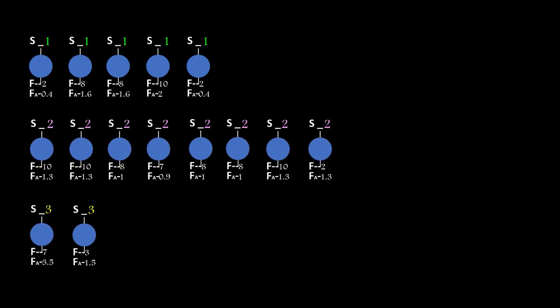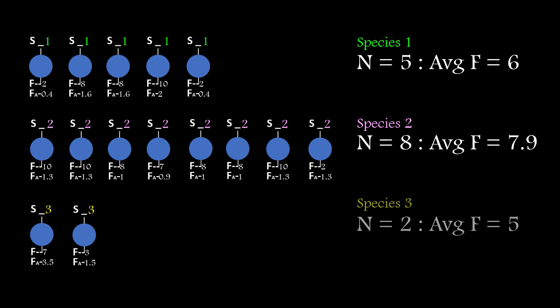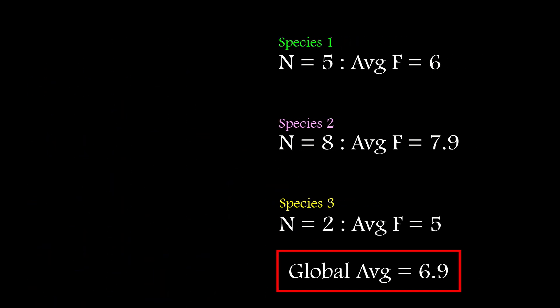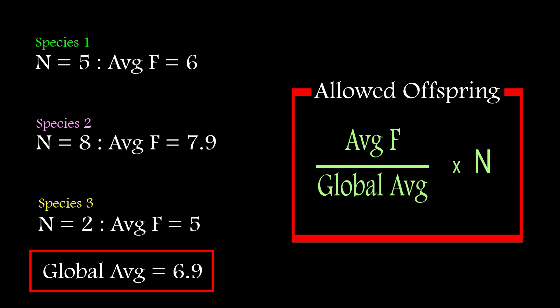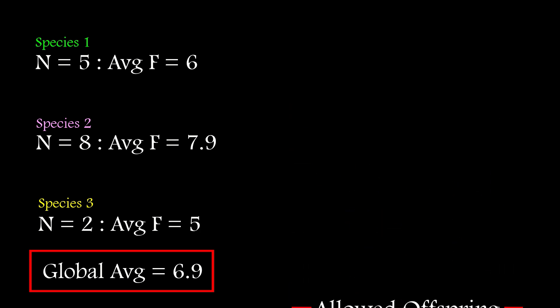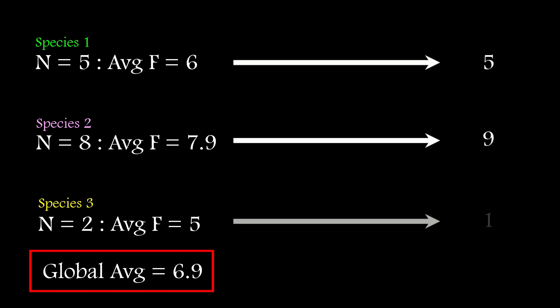To start with, I'm going to work out the average fitness for each species. So species 1 has 5 members with an average fitness of 6, species 2 has 8 members with an average fitness of 7.9, and species 3 has 2 members with an average fitness of 5, and the entire population has a fitness average of 6.9. And the offspring allowed by a species is given by the formula shown. When I work it out, we can see that species 1 can produce 5, which is the same as it had, species 2 will grow by 1 to 9, and species 3 will drop from 2 to just 1.